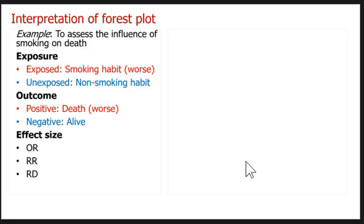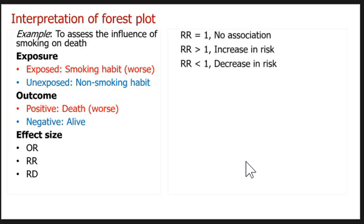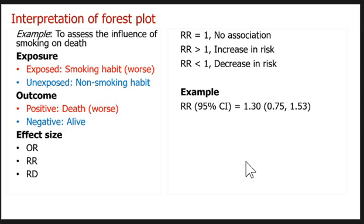Generally, to test the hypothesis for a binary outcome, we use odds ratio, risk ratio, or risk difference. If we use risk ratio or odds ratio, then a value of 1 represents no association. If the risk ratio is greater than 1, then the factor is a risk factor. However, if the value of risk ratio is less than 1, then we can say that the factor is a protective factor, meaning there is a decrease in risk.